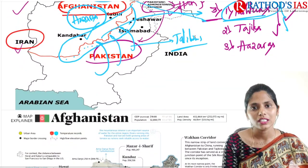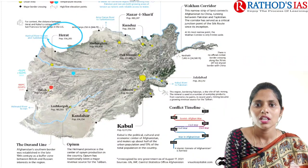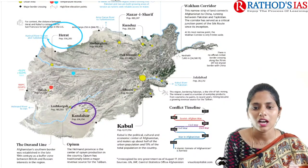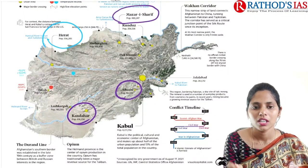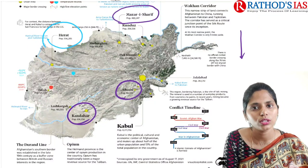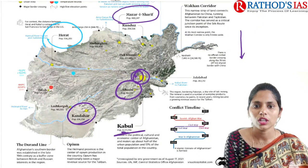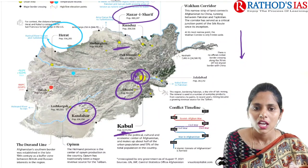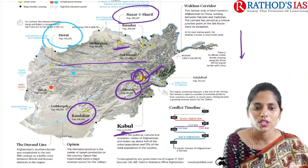Now let us try to see some important locations in Afghanistan. You need to remember Herat, Kandahar, Ghazni, Kabul, and Mazar-i-Sharif. You can get a question asking you to arrange these cities from north to south. From north to south the order is: Mazar-i-Sharif, then Herat, then Kabul, then Ghazni, and then Kandahar.